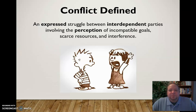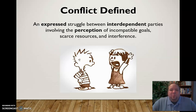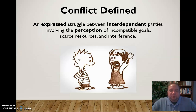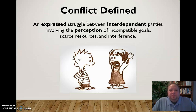Conflict also involves at least the perception of incompatible goals, scarce resources, and interference. Perception is highlighted because it doesn't even have to exist in reality. Maybe your goals aren't actually incompatible, but you think they are. Or you perceive scarce resources even though they are actually abundant and readily available. So the perception of these things, as well as the reality of them, could be involved in conflict. It just has to be something the people involved believe is true.